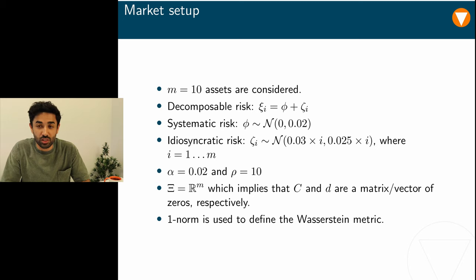Okay, so let's get to the numerical simulations. For their numerical simulations, the authors considered a market with m equals to 10 assets. Returns on the assets are normally distributed and are governed by two risk factors: systematic risk which is identical for each asset and idiosyncratic risk which increases for assets with higher indices. The mean and variance of their relevant normal distributions are as shown. α and ρ which are used in the definition of the loss function are set to 0.02 and 10 respectively. The uncertainty set is taken to be an m-sized vector of real numbers and that means we may set C and d to 0.